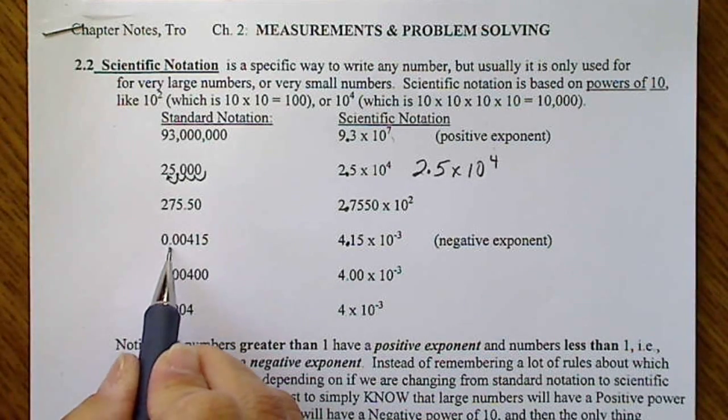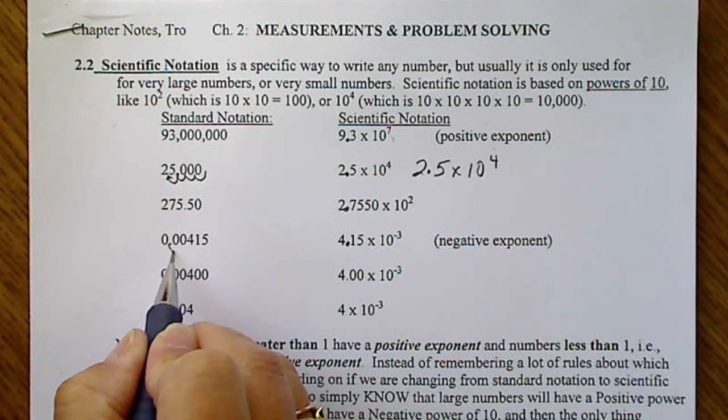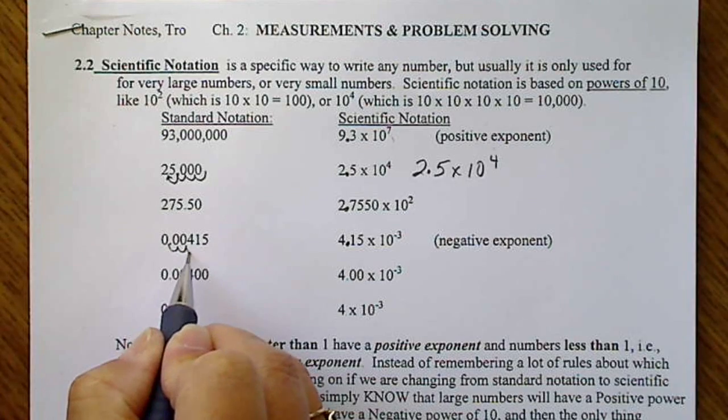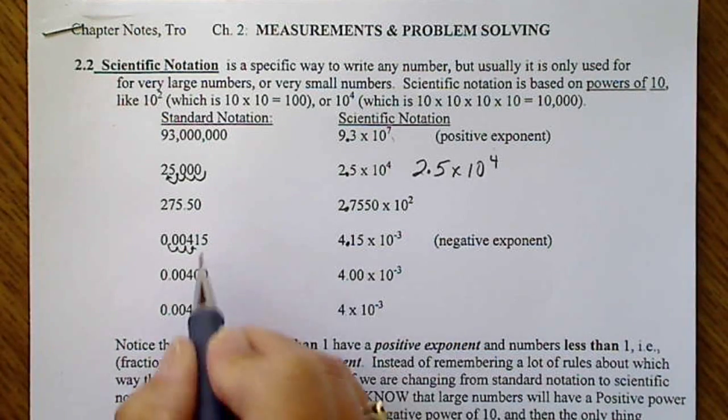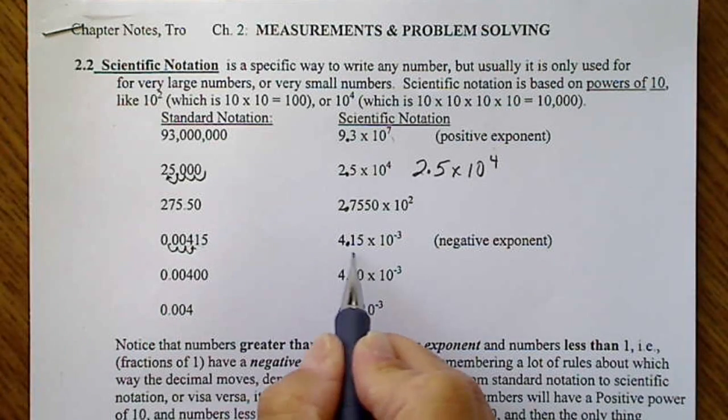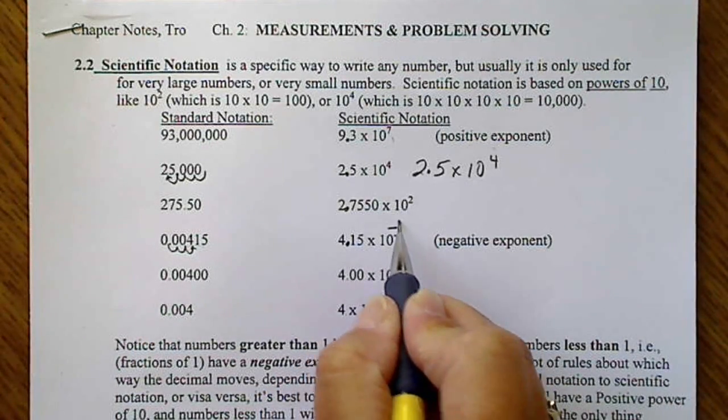If we take this number and move the decimal, we're going to move the decimal 1, 2, 3 places, and we're going to write all of these values here: 4.15 times 10 to the negative 3rd.